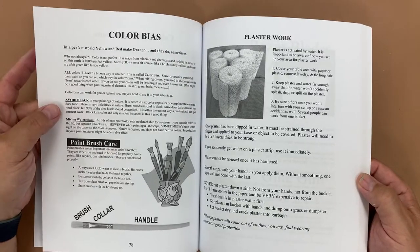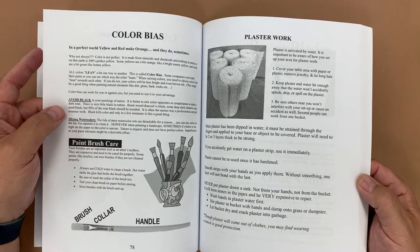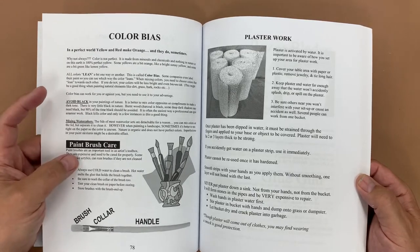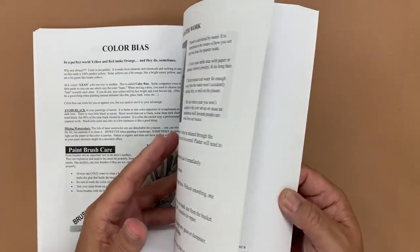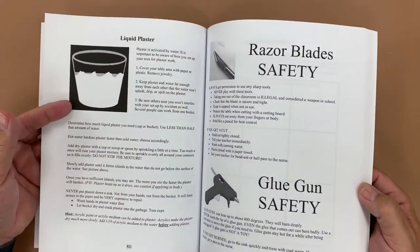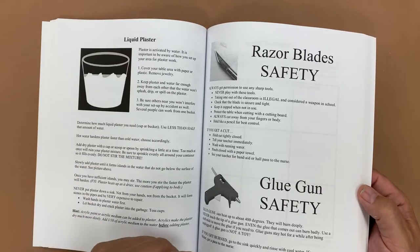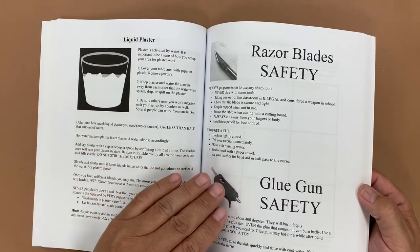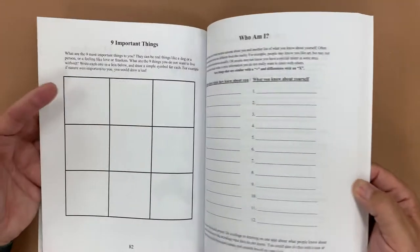Color bias information, how yellow and red make orange. Sometimes they do, sometimes they don't, and how colors can kind of lean one way or another. Taking care of your brush, plaster work. So as students are exploring certain things, then there's going to have some resources in here on how they could mix plaster correctly, how to use razor blades correctly. And again, I will have videos on my YouTube channel that will help with all of these things.